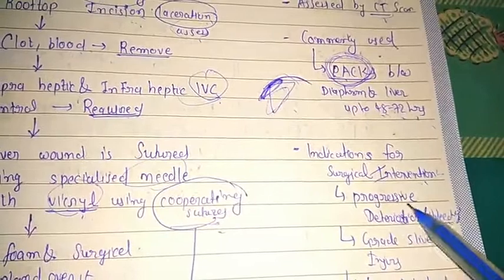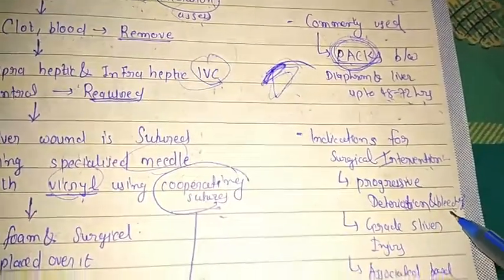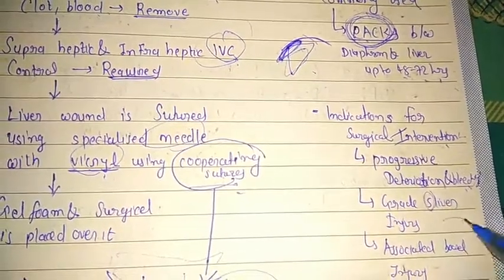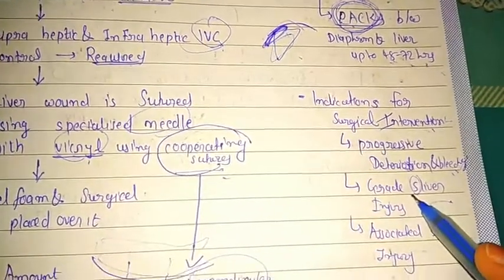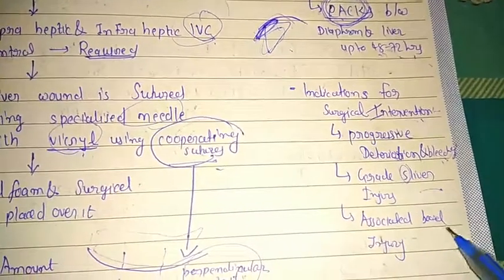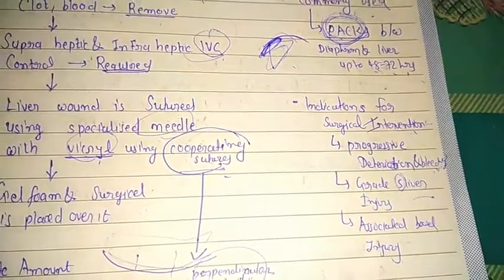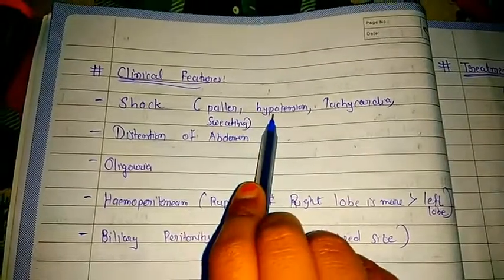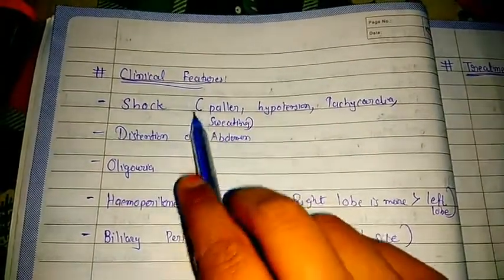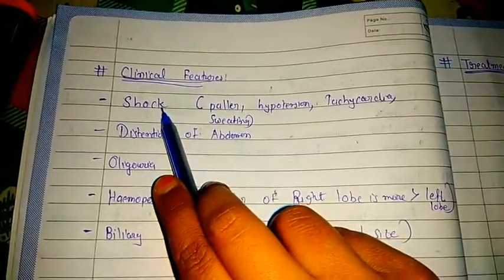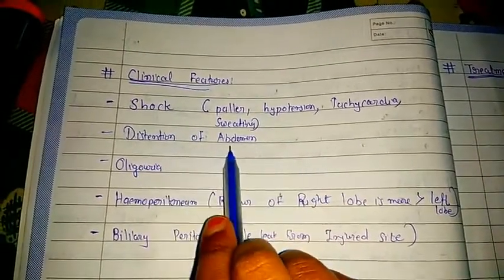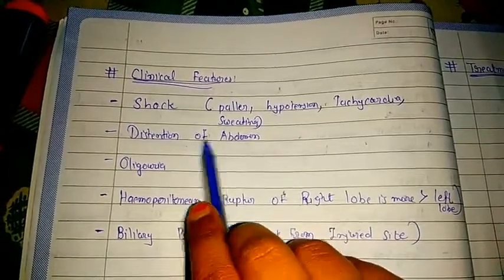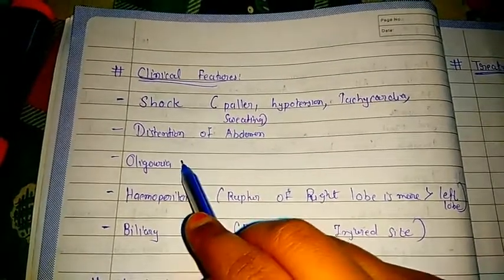Surgical intervention is indicated if there is progressive deterioration and bleeding, grade 5 liver injury on CT scan, or associated bowel injury. Clinical signs include pallor, hypotension, tachycardia, and sweating — all shock symptoms — as well as distension of abdomen due to liver injury and oliguria (reduced urine output).